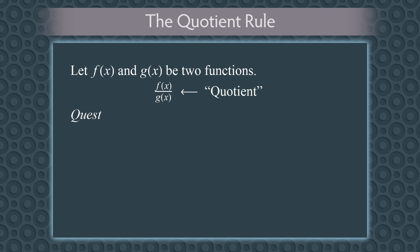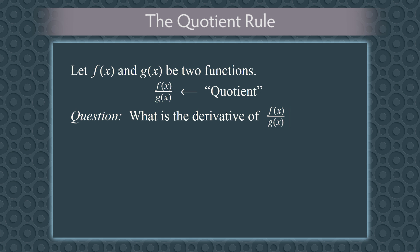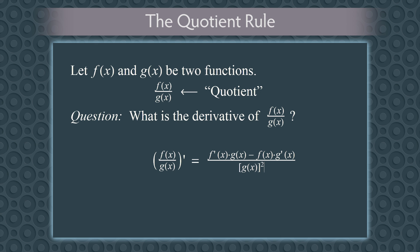The Quotient Rule answers the question: what is the derivative of f divided by g? The rule says that the derivative of f divided by g is the derivative of f times g, minus f times the derivative of g, all over g squared. Leaving out the x's, you can write this more compactly as f prime times g minus f times g prime, all over g squared.